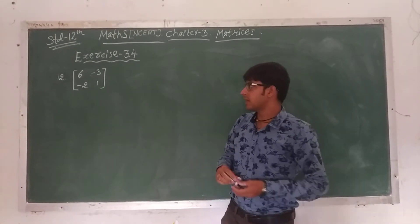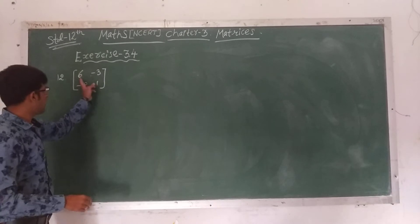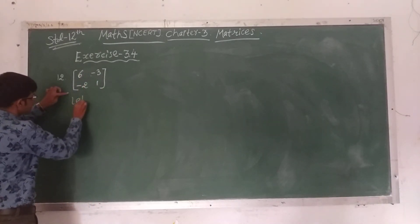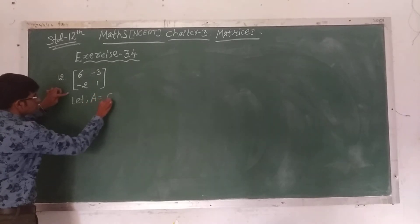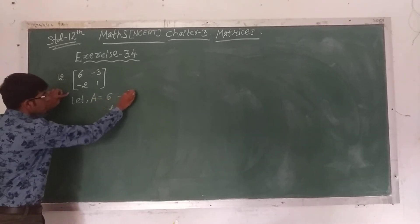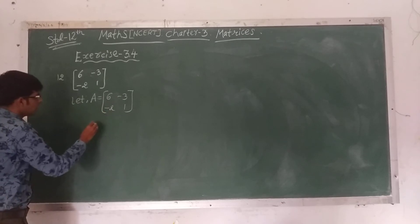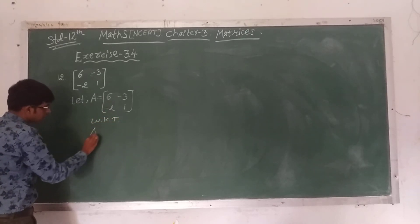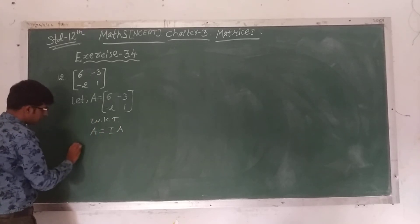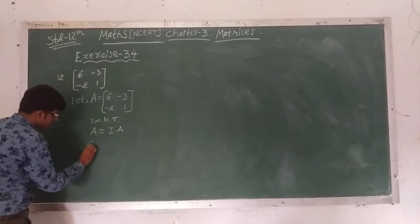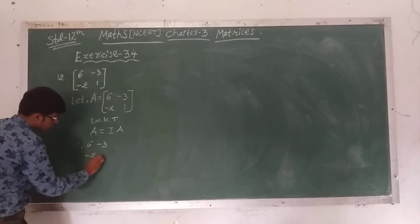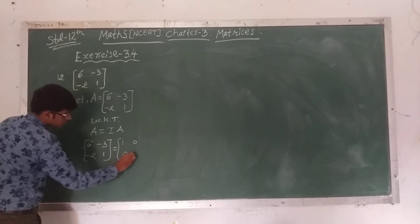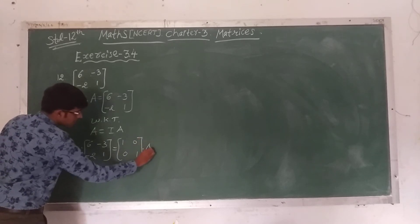Next we will start question number 12: matrix [6, -3; -2, 1]. Let A equal to [6, -3; -2, 1]. We know that A equals I times A. So the value of A is [6, -3; -2, 1] equals the identity matrix [1, 0; 0, 1] times A.